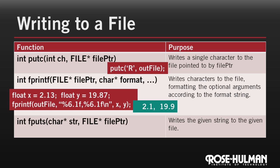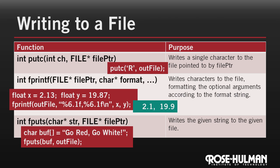Finally, fputs writes a given string to the end of the given file. Here's an example. This is pretty straightforward, but there's one gotcha here. In fprintf, the file pointer was the first argument. In fputs, the file pointer is the last argument. If you try to use the wrong order, the compiler will catch it, so it isn't a big deal.